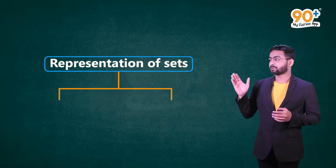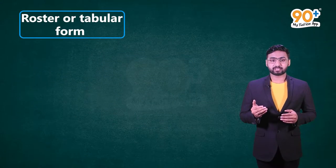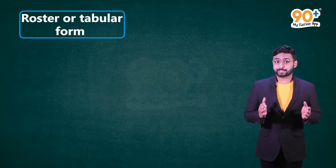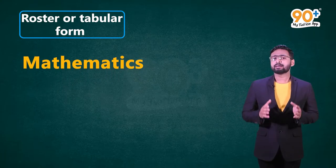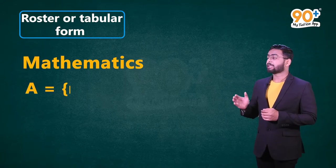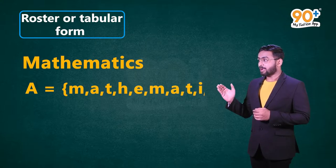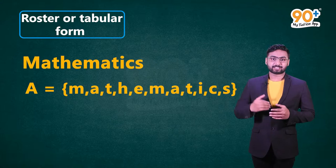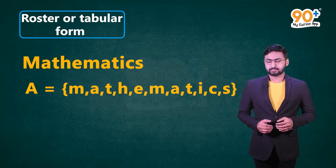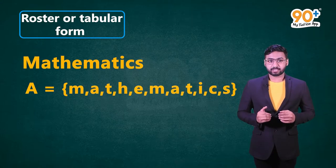Now let's take a look at how to represent a set. There are two methods: first, roster or tabular form; second, set builder form. Let's look at the first method with an example: the set of all the letters in the word 'mathematics.' We can write this as A = {m, a, t, h, e, m, a, t, i, c, s}. All the letters in the curly brackets are known as elements and they are separated by commas.